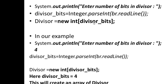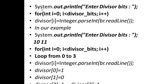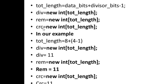The divisor_bits value is 4 in this example. A divisor array is created with size 4. The user then enters the divisor bits, and each value is added to the divisor array through a loop: divisor[0]=1, divisor[1]=0, divisor[2]=1, divisor[3]=1, giving us a 4-element divisor array representing the polynomial 1011.